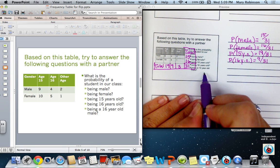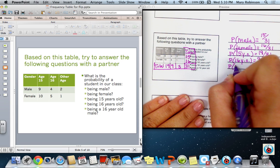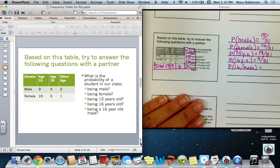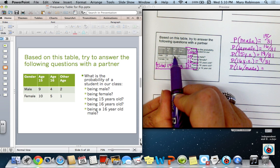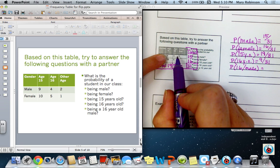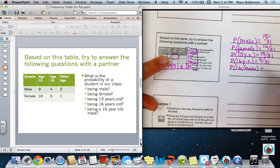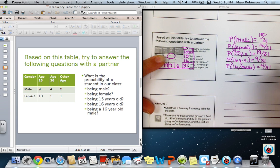Lastly, the probability of being a 16 year old male, so the probability that someone is 16 and a male, we would want to look at our table for that number. So male age 16, we want to look where the column and the row meet and we see that there are four students that are both 16 and male. So my probability is 4 out of 31.